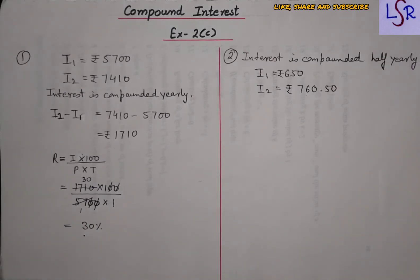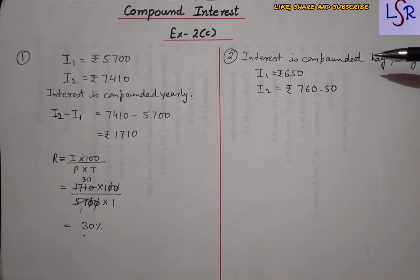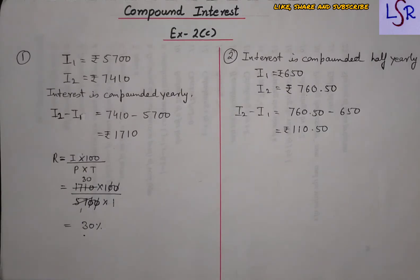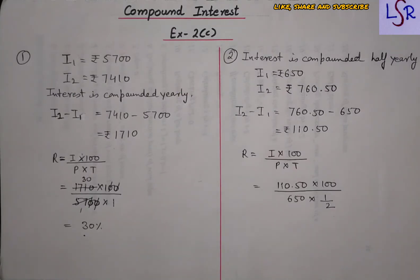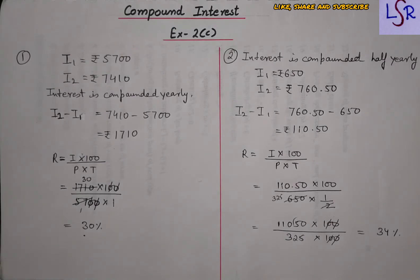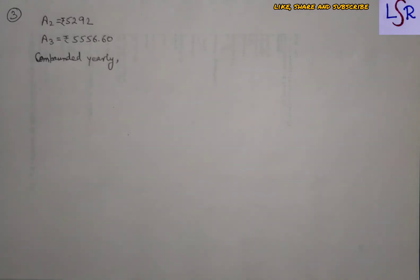In question number two, a certain sum of money is put at compound interest compounded half-yearly. The interest for two successive half-years is 650 and 760.50. We have to find the rate of interest. This is similar to question one, but here the interest is compounded half-yearly. We find the difference of the two interests, then apply the rate formula with time = 1/2. Solving, we get 34% as the answer.